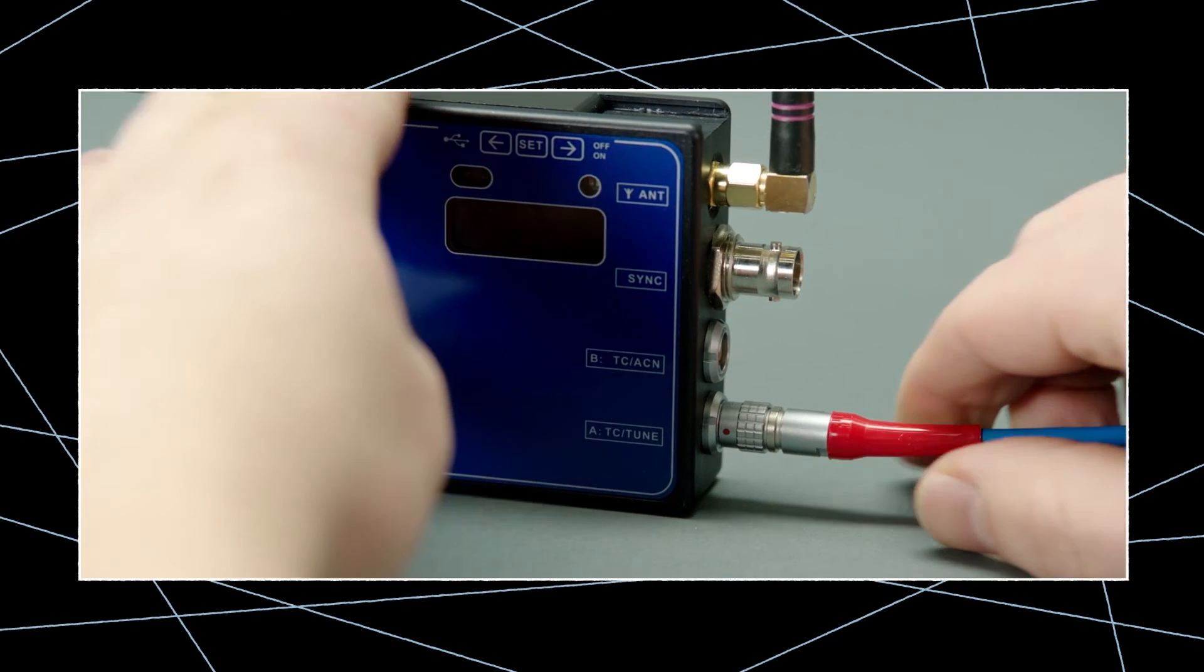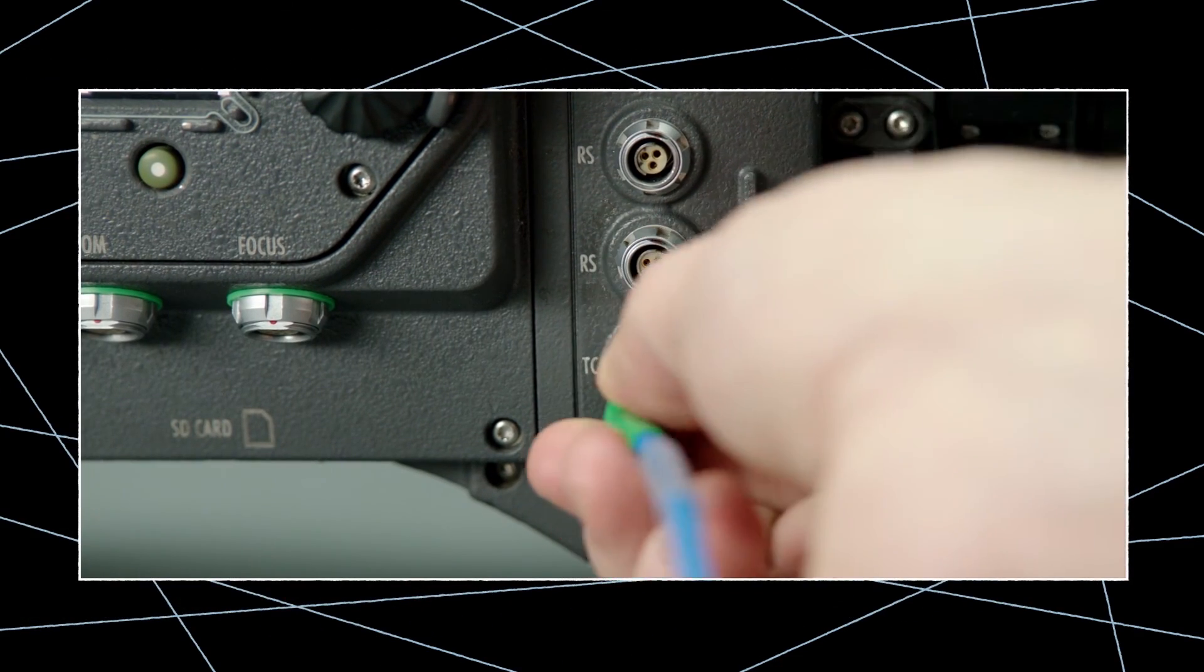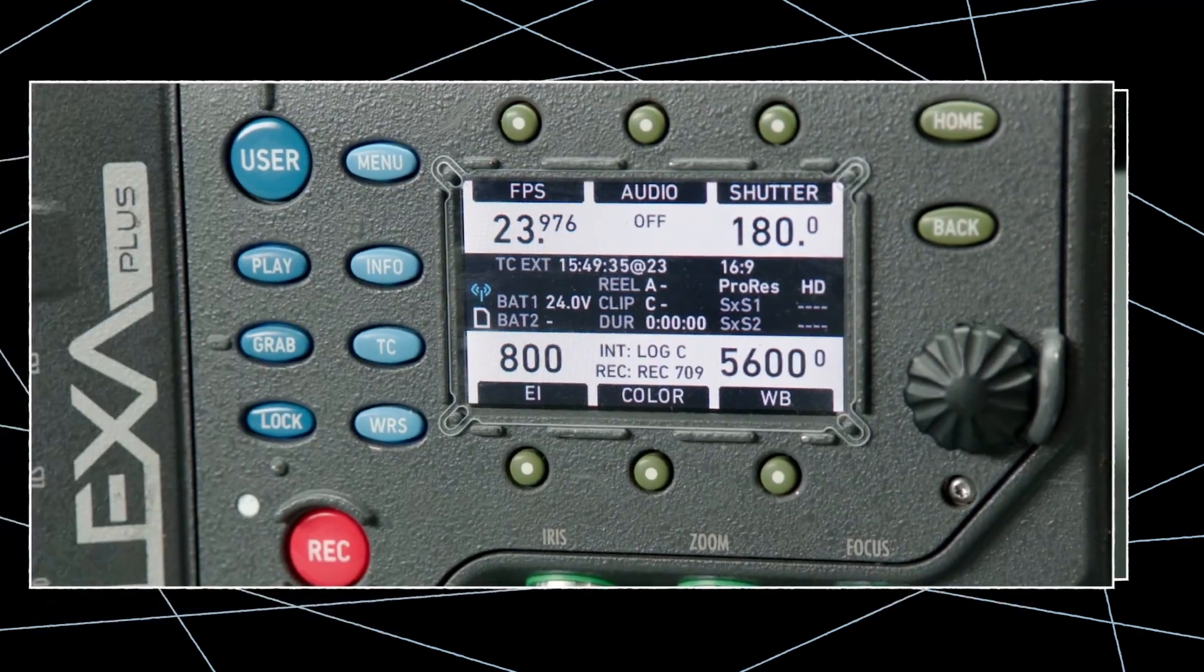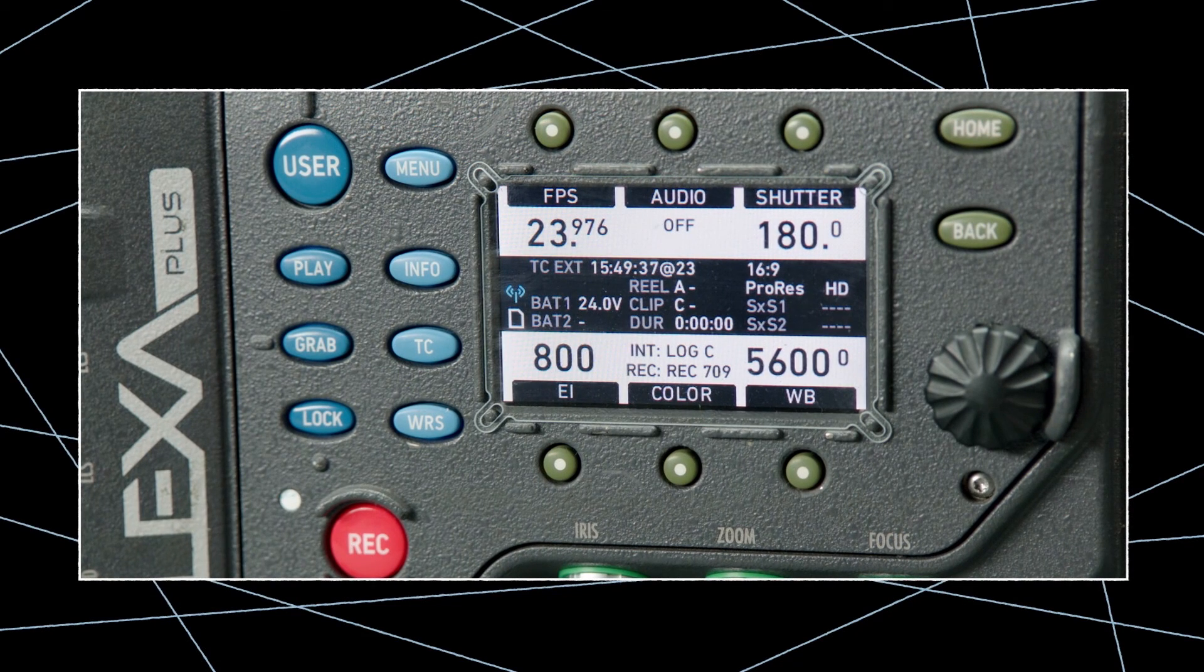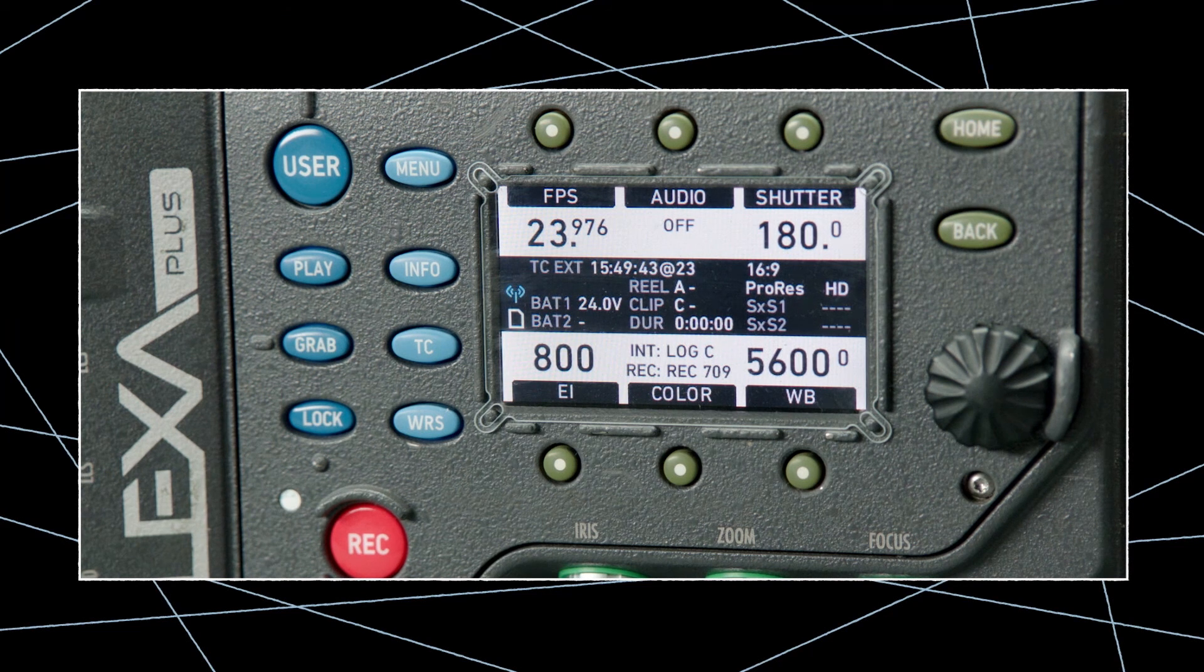Last but not least, connect the locket to the ALEXA camera. The timecode display should show X for external, along with the external frame rate, and start running. When your system is synced like this, your cameras will run for an entire shooting day without drift.